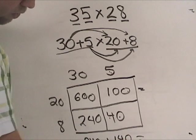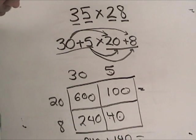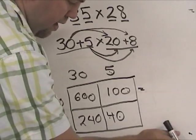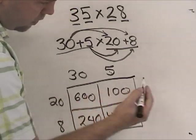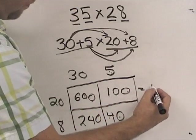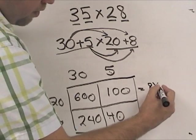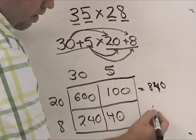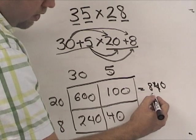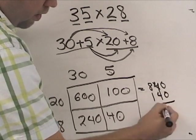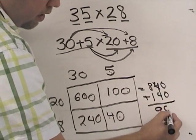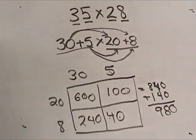Now, all I have to do is add those two together. Actually, I guess you guys can't see that on the board. But 600 plus 240 is 840, and 100 plus 40 is 140. If you add those two together, you get 980, which is the exact same answer.